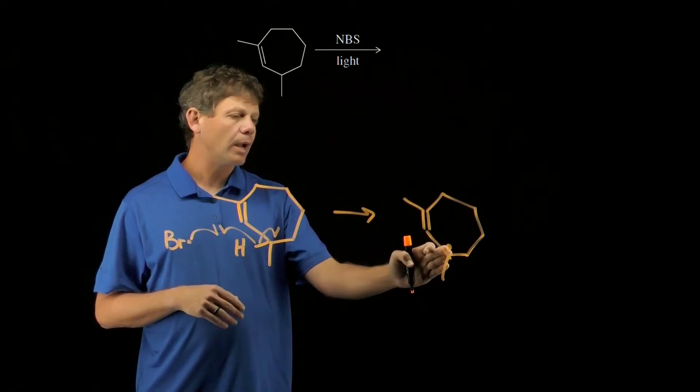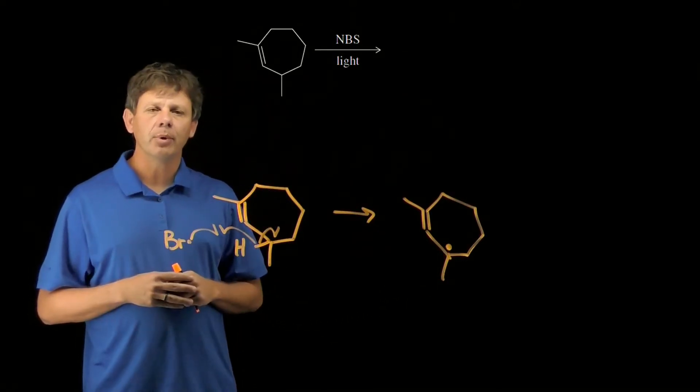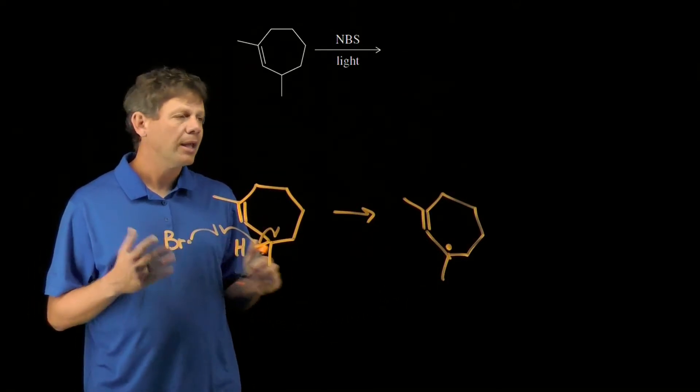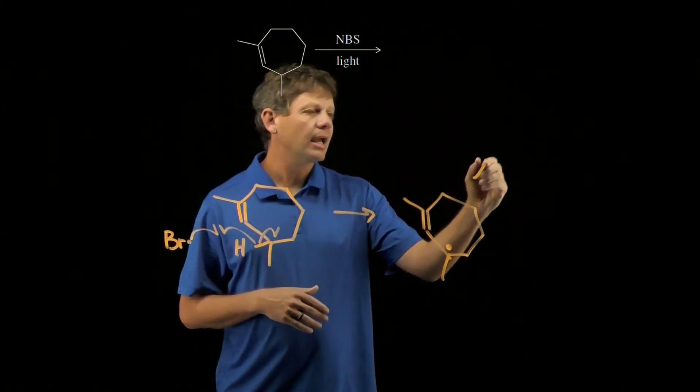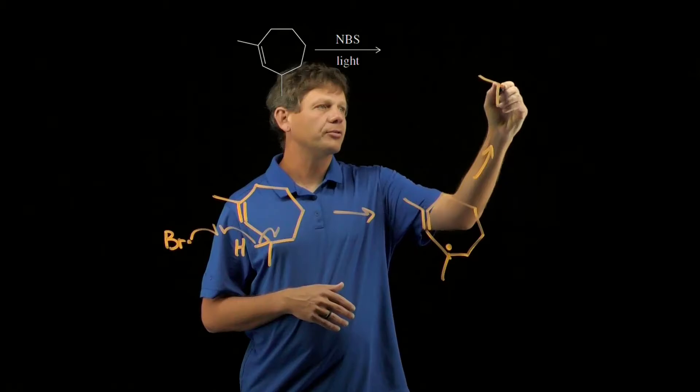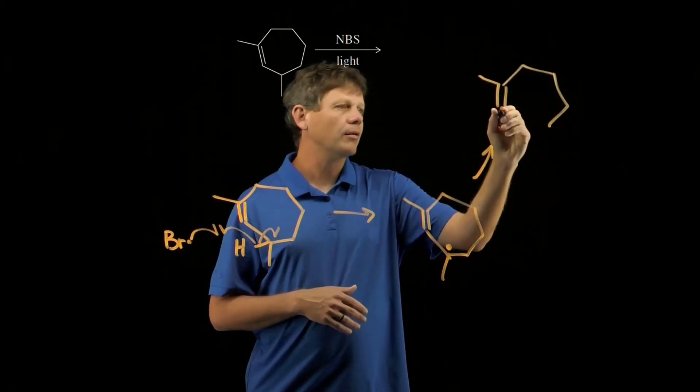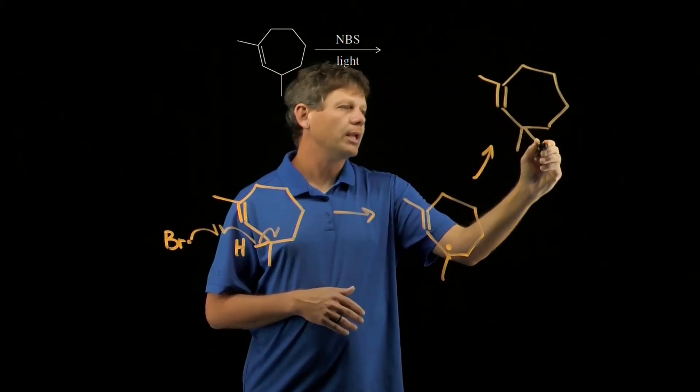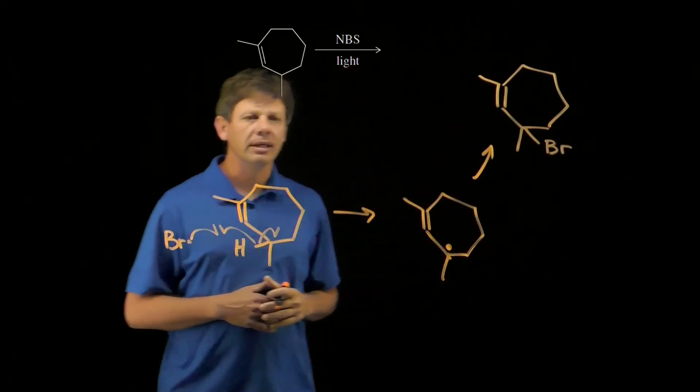Now it turns out, regardless of where the radical is, we're going to end up with the same product. So we don't have to even look at what product would result from the other resonance structure. Let's go ahead and draw the product of this reaction. We would end up with the bromine there.